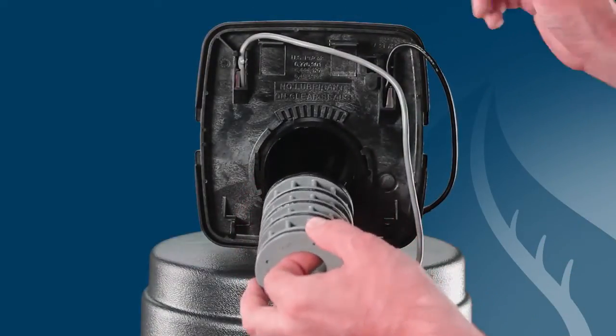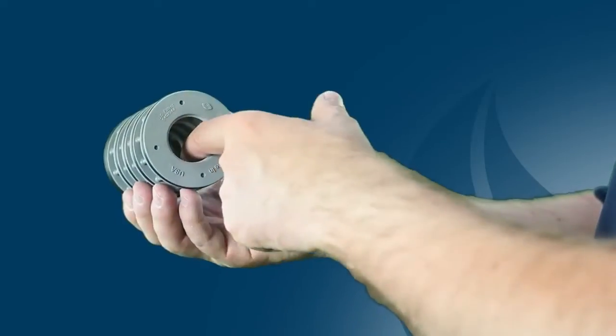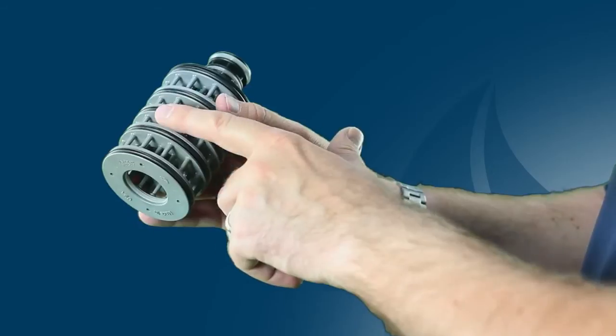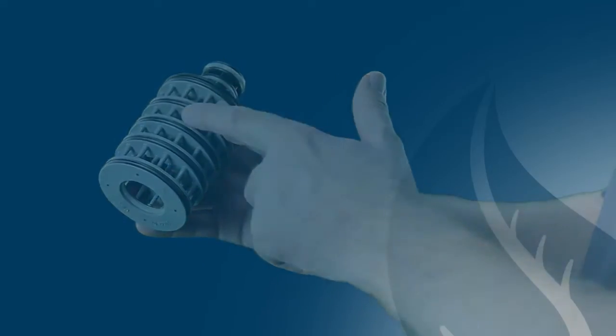You can then reach in the valve and pull out the spacer stack assembly. Check the pistons and spacer stack assembly for scale buildup or foreign objects. If any are visible, clean the valve parts and remove any obstructions.